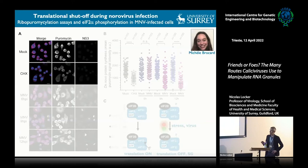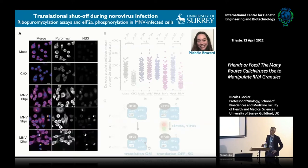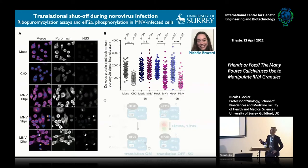Michel in my lab used ribopuromycilation assays to measure translation at the single-cell level by measuring incorporation of puromycin into nascent peptides, detected with specific antibodies. In untreated cells we have high puromycin levels; blocking translation with cycloheximide reduces incorporation. Looking at a kinetic of infection, as infection progresses in NS3-labeled infected cells, we can see reduced translation activity, with a gradual decrease in protein synthesis as infection advances.